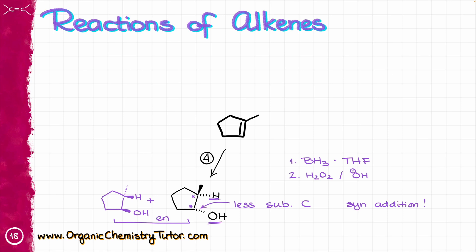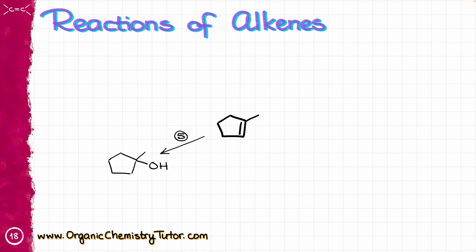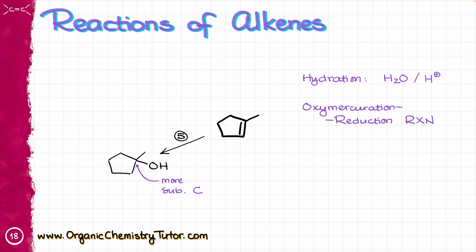In my next reaction, I do have OH on the more substituted carbon. That can be either a simple hydration — if I want to do a simple hydration reaction, I would just react with water, H₂O, in the presence of some sort of an acid catalyst, shown as H⁺. Or alternatively, I can do the oxymercuration-reduction reaction, which is sometimes called oxymercuration-demercuration — same thing for our purposes. That one is also a two-step process.